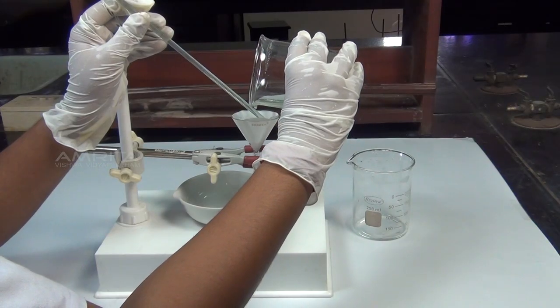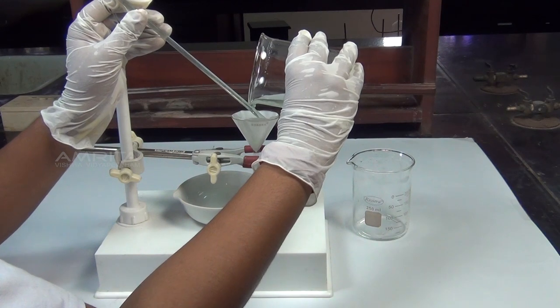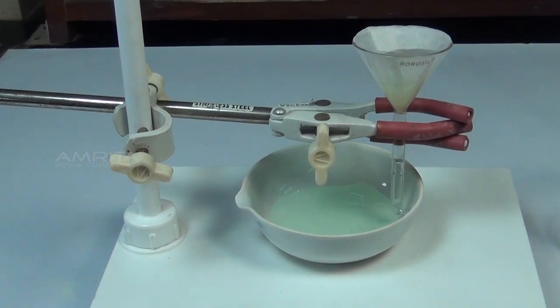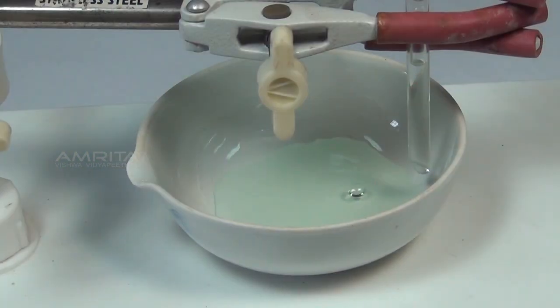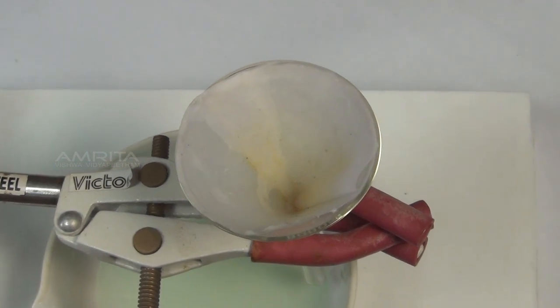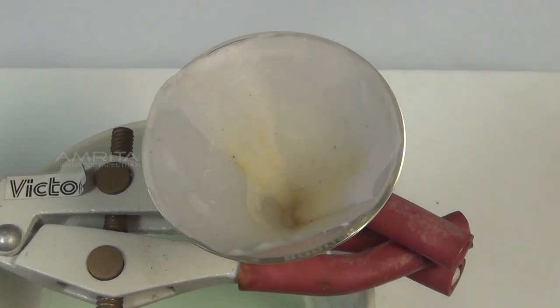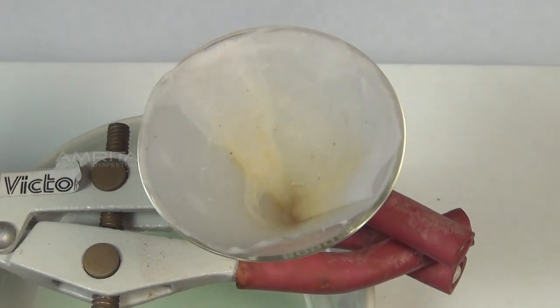Then filter the solution into the china dish using the funnel and the filter paper. The stem of the funnel should touch the wall of the china dish to avoid the solution splashing out. After filtration, the insoluble impurities are left behind on the filter paper.